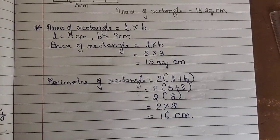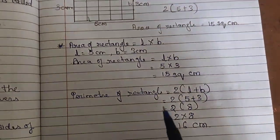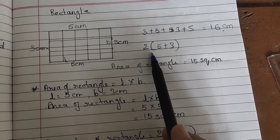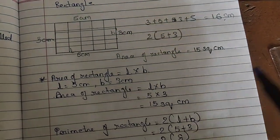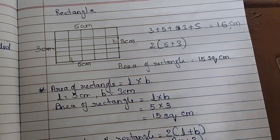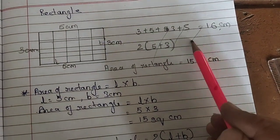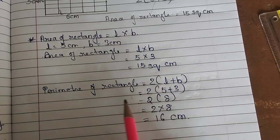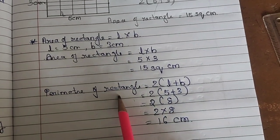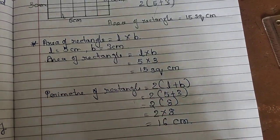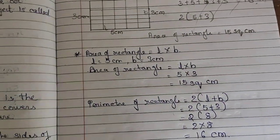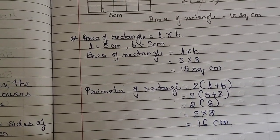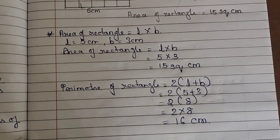Students, you are supposed to write down everything — finding the area of the rectangle using the counting method, the area by formula, and the perimeter by formula. Now we will solve some sums related to the area and perimeter of rectangles and squares.